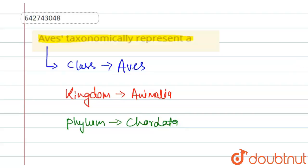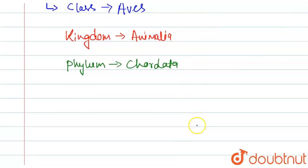So Aves belongs to taxonomically, belongs to kingdom Animalia, Phylum Quadrata and there is a class Aves. If we talk about the characteristics of Aves,